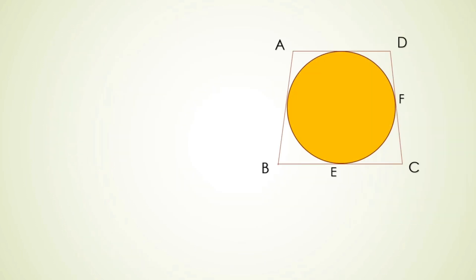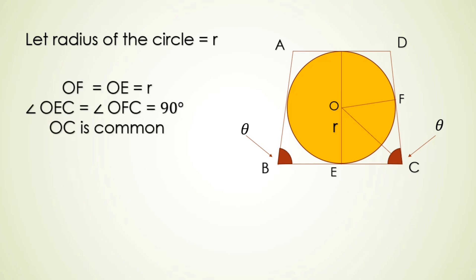So let's focus on the trapezium. Let us suppose that the radius of the circle is equal to r. Here OF is equal to OE is equal to radius of the circle and angle OEC is equal to angle OFC is equal to 90 degree.